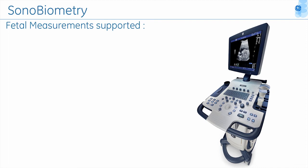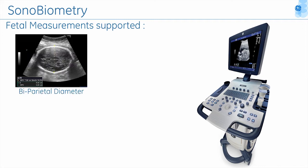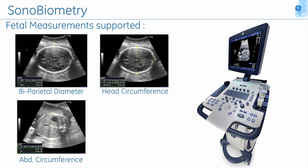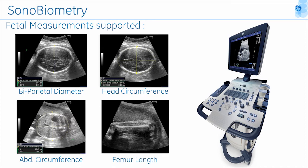Currently, the Sonobiometry algorithm supports automatic measurement of the following fetal measurements: biparietal diameter, head circumference, abdominal circumference, and femur length.